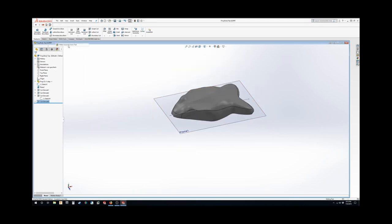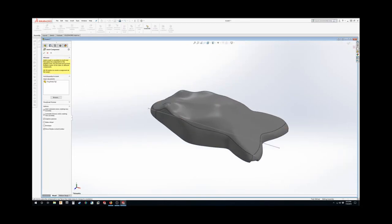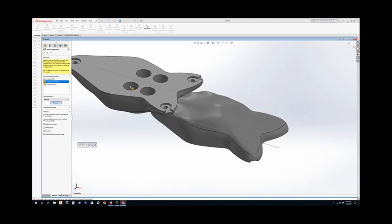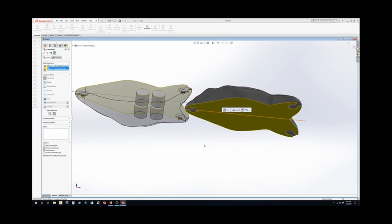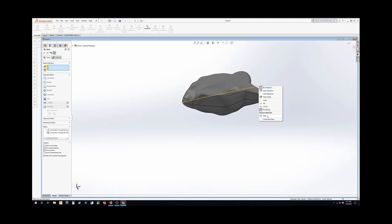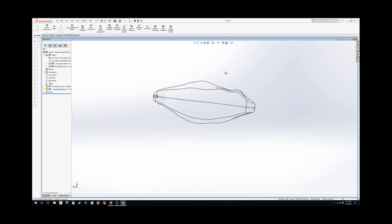Everything's looking good at this point. I'm just going to jump into assembly and make sure everything lines up correctly. It should, but I just double-check just to be safe. I'm just going to hide that. And everything looks good.